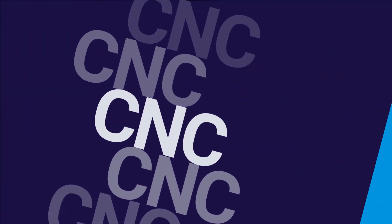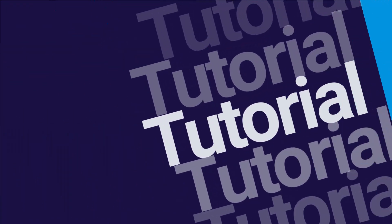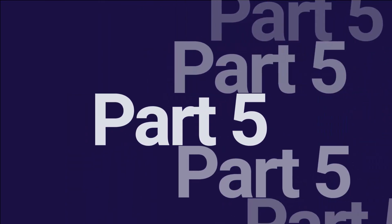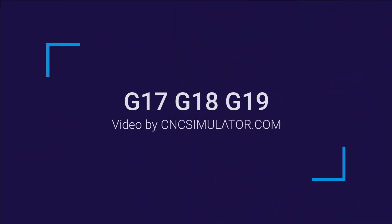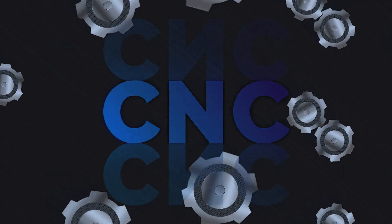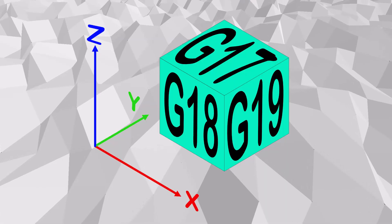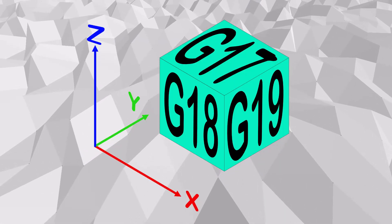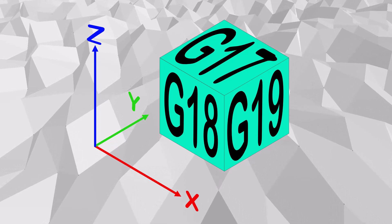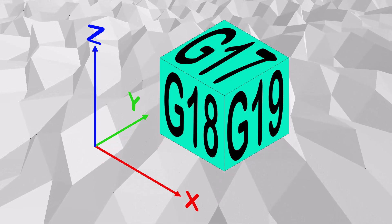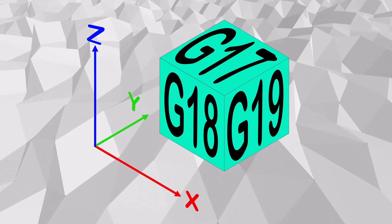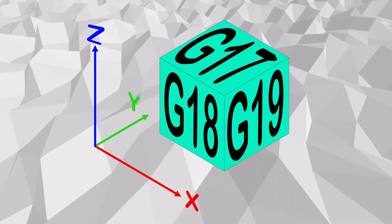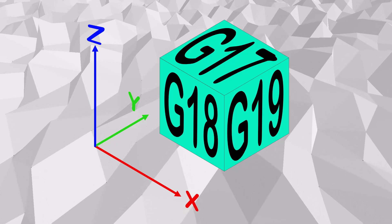Welcome back to our CNC tutorial series. Today, we're diving into the world of plane selection with G17, G18, and G19. These G-codes might seem a bit abstract at first, but they're fundamental when it comes to 3D machining. Let's get started.